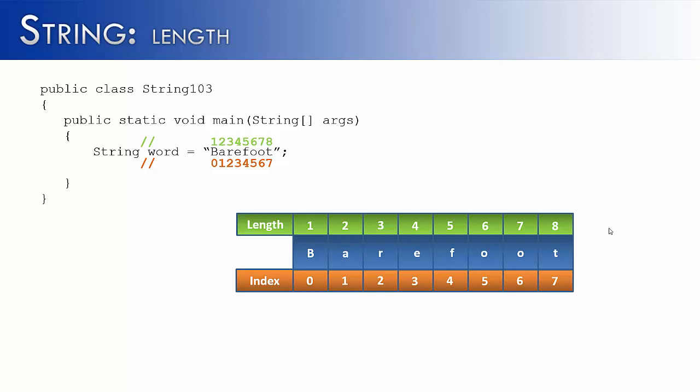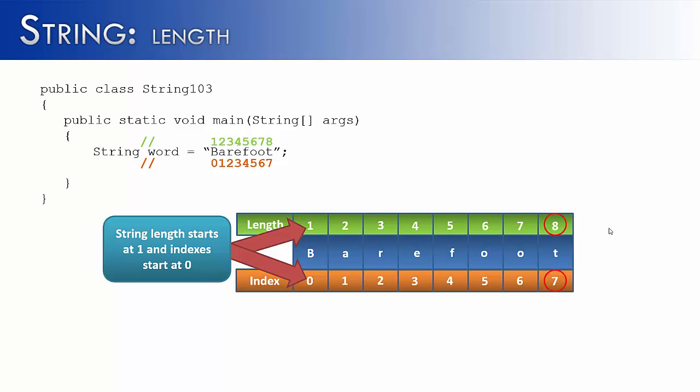And you'll notice that the index is slightly different from the length. The index is always going to start at zero, whereas the length is always going to start counting at one. Where is this going to make a difference? It's going to make a difference in the last character. The last character's index is going to be seven, whereas the length is going to be eight. So we can glean from this that the length is always going to be one greater than the highest index of the string. And the index is always going to be one less than the length of the string.